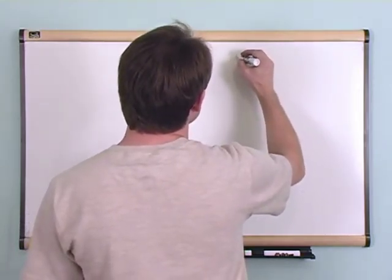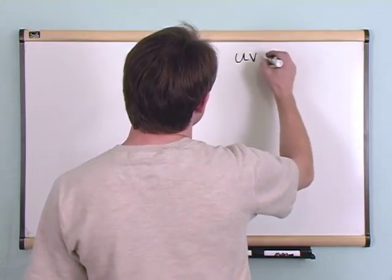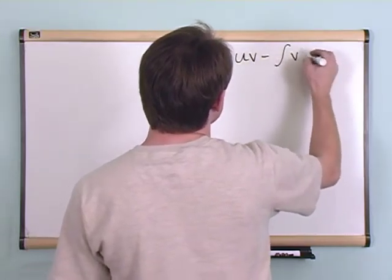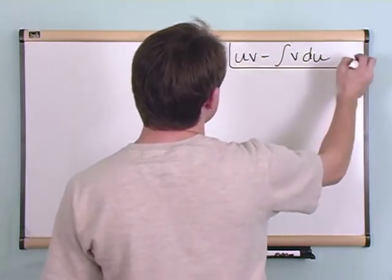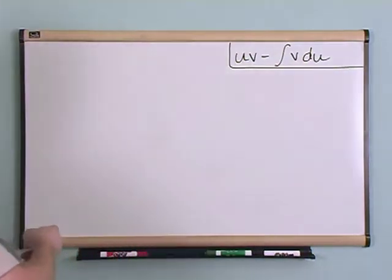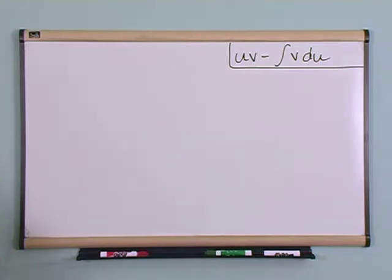Integration by parts: you have uv minus the integral of v du. And this is it. That's all I'm going to put on the board. That's integration by parts. Now you're not expected to know what that means or how to use it. That's my job to teach you that.